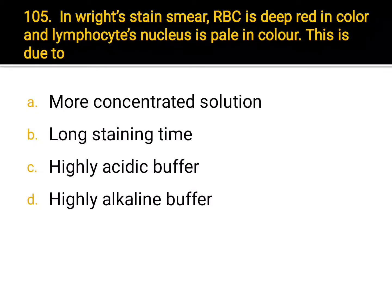In Giemsa stain smear, RBC is deep red in color and lymphocyte nucleus is pale in color. This is due to: A. more concentrated solution, B. long standing time, C. highly acidic buffer, D. highly alkaline buffer. Correct answer: C. Highly acidic buffer.